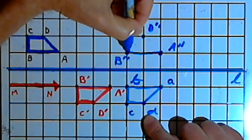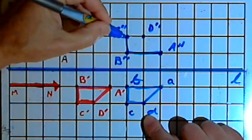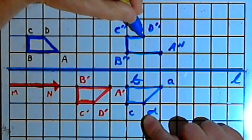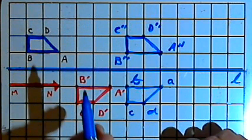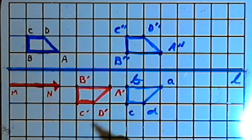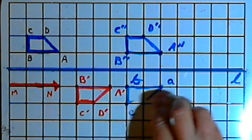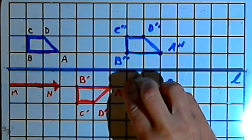And now I'll connect these points. Now I've got my image that's gone through a translation and a reflection, and I'll erase this intermediate image that I have.